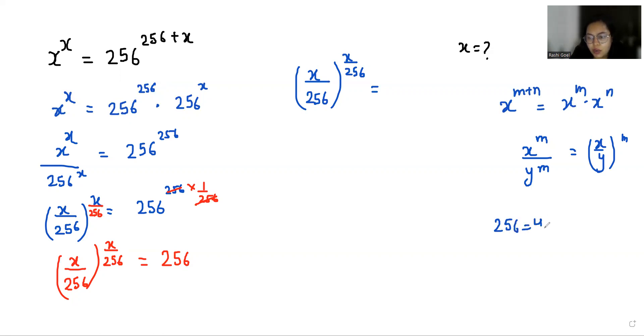We can write it as 4 times 4 times 4 times 4, that means 4^4. Now if we compare both sides, x/256 equals 4.